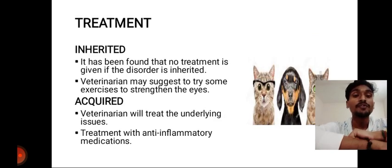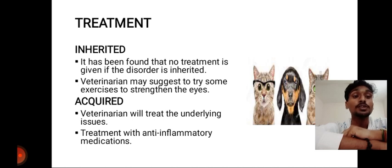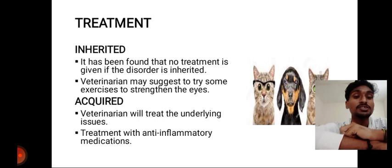Treatment differs for inherited and acquired cases. For inherited Strabismus, no definitive treatment is given; the doctor may suggest exercises to strengthen the eyes since the muscles have been weakened. For acquired Strabismus — which includes vestibular problems and injuries — the veterinarian will treat the underlying issues, using anti-inflammatory medications. Acquired Strabismus can be cured, but inherited Strabismus cannot.